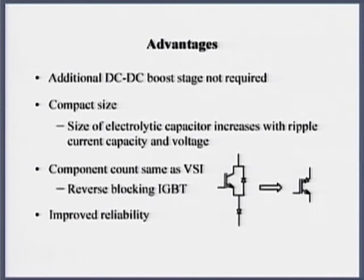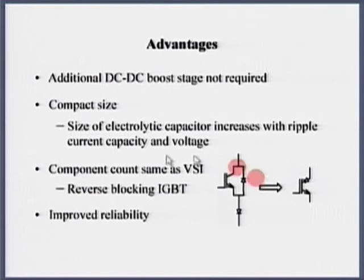Component count is the same. Actually this diode, instead of connecting here, I need to connect here. If I have a reverse blocking IGBT, I do not need to have this diode, or if I have a device which can block voltages in both the directions, then I do not need to use this diode. It is GTO, conventional GTO, not the anode short GTO, can block the voltage in both the directions, but then it is a low frequency device. Improved reliability - why improved reliability? I have an inductor, not a capacitor there.